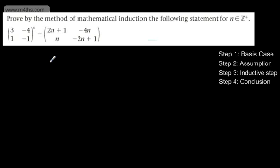This is now our fifth video on proof by induction. In this question we're asked to prove by the method of mathematical induction the following statement for n, where n is a positive integer. We've got a matrix equation: on the left-hand side we've got the matrix (3, -4; 1, -1) raised to the power of n, and on the right-hand side we've got (2n+1, -4n; n, -2n+1).